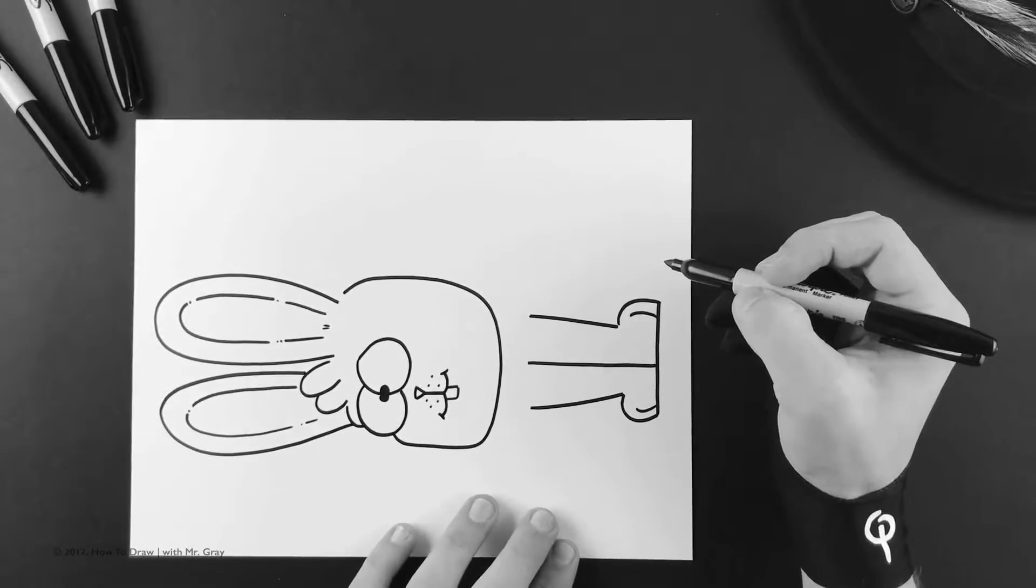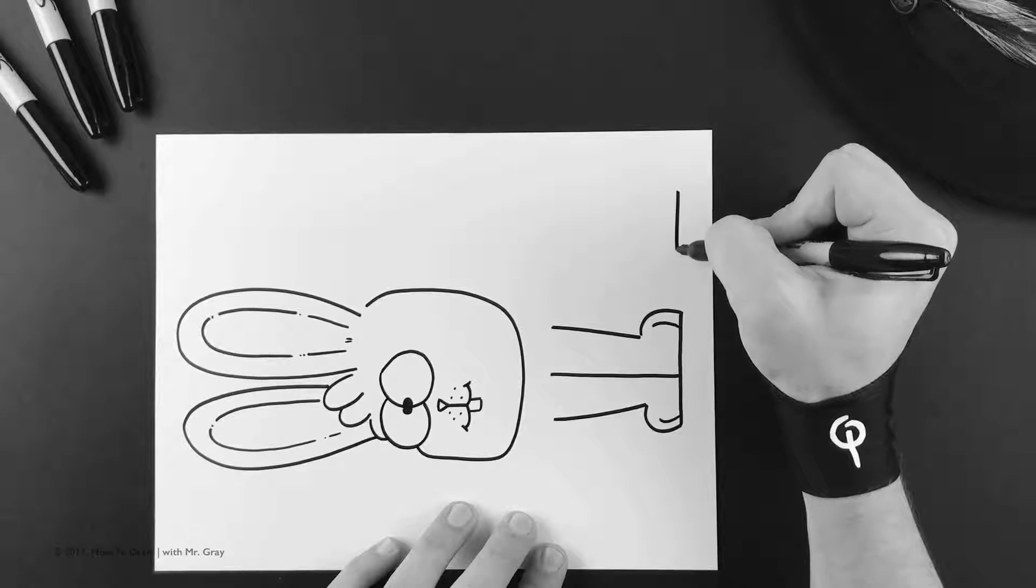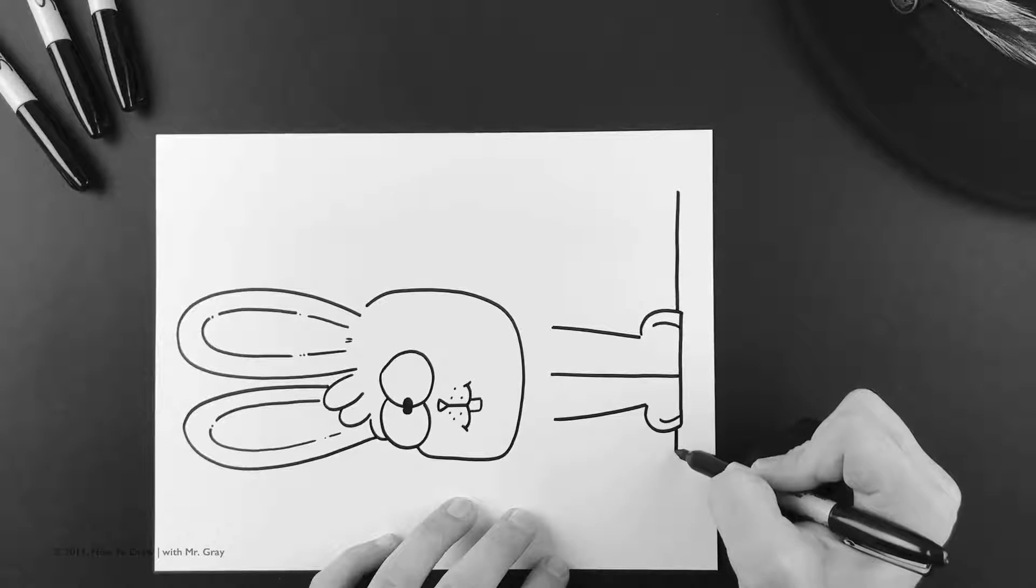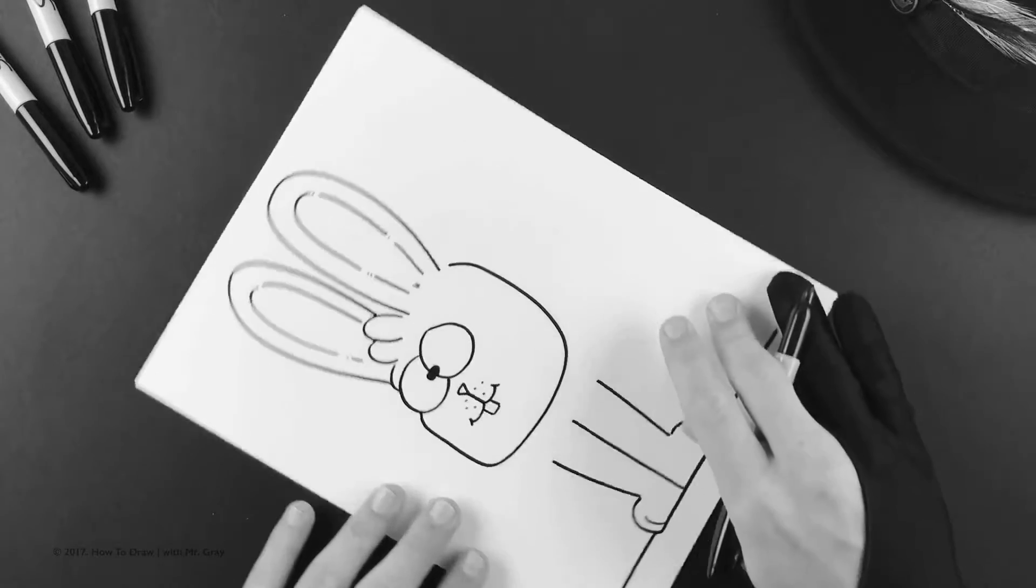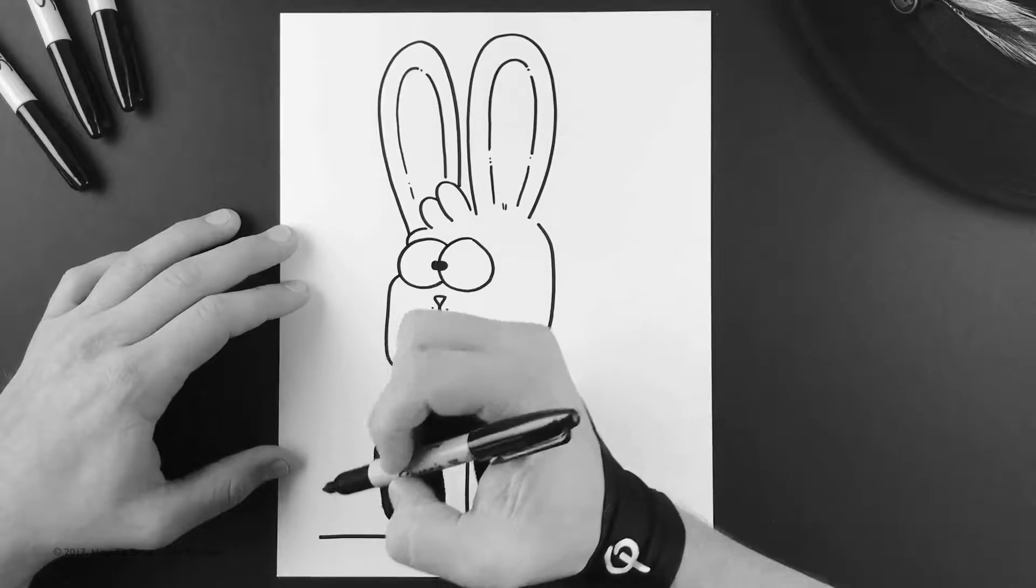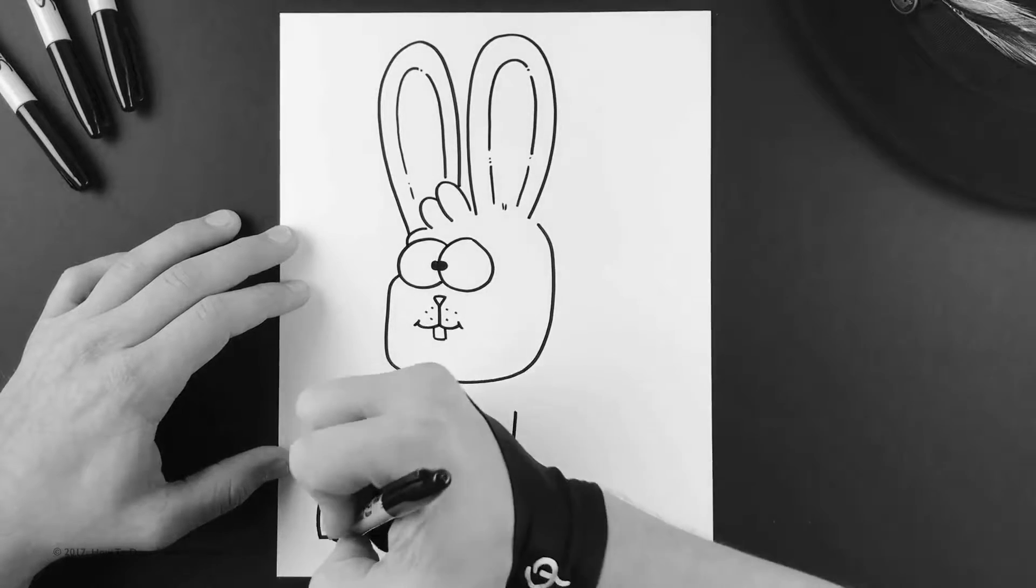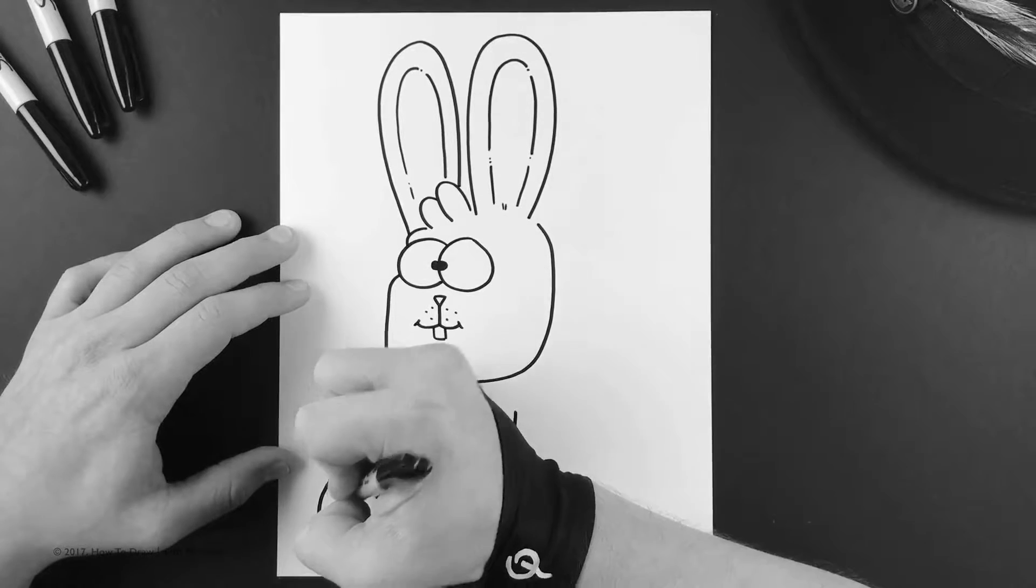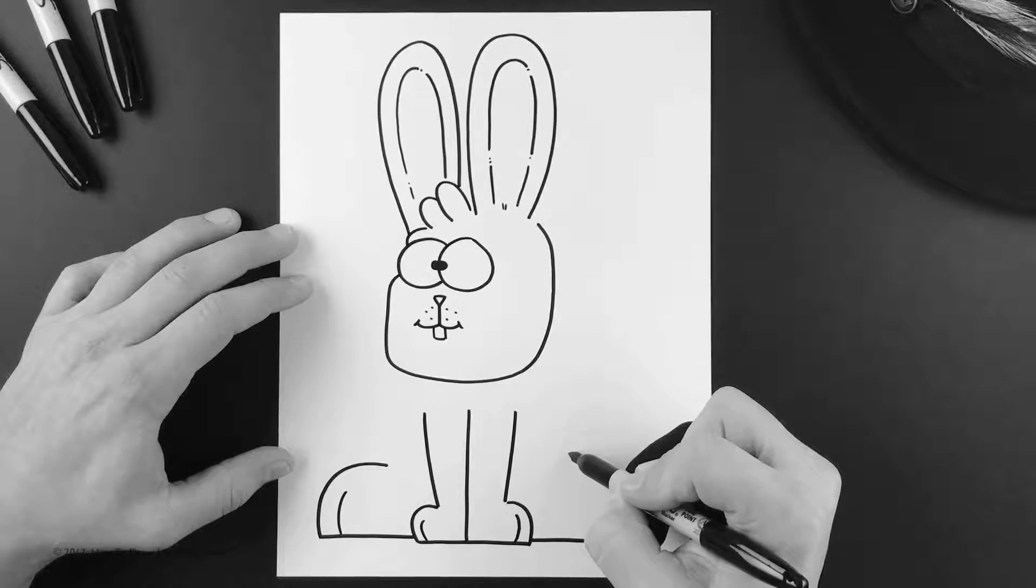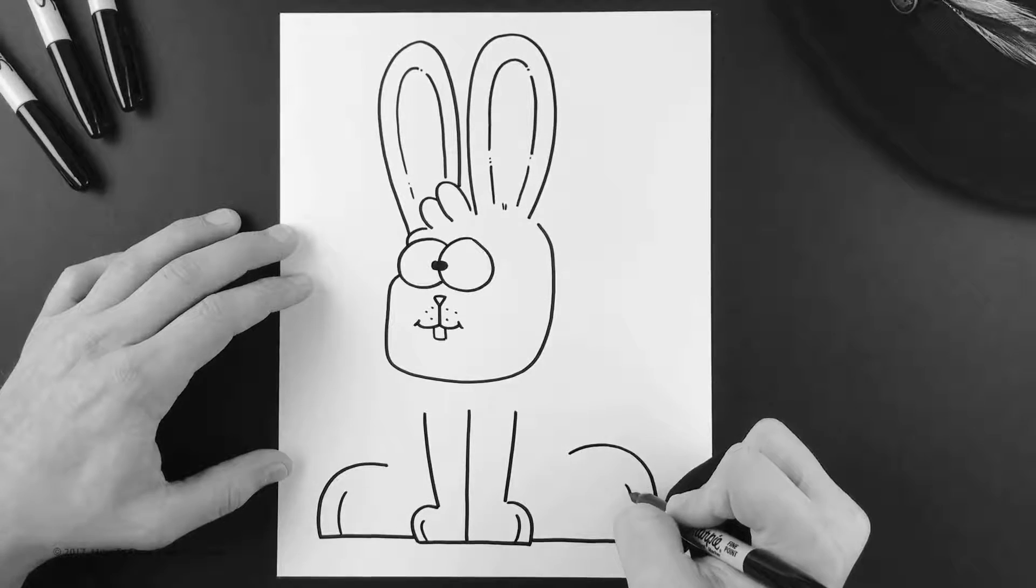Now next we're gonna go ahead and get ready to draw the rest of his paws. So do one straight line coming off there, another one just like that. So now we're gonna do his first paw, do it a little bit bigger than those, and then add a little toe.